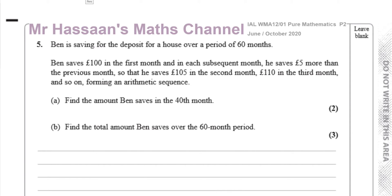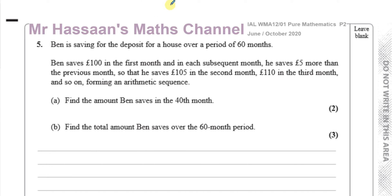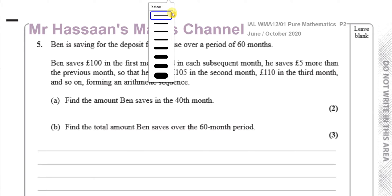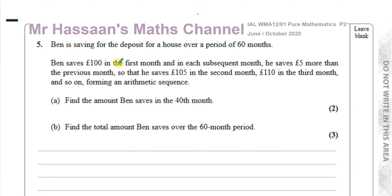This question is about Ben, who is saving for the deposit for a house over a period of 60 months. Ben saves 100 pounds in the first month, and in each subsequent month, he saves 5 pounds more than the previous month, so that he saves 105 in the second month, 110 in the third month, and so on, forming an arithmetic sequence.